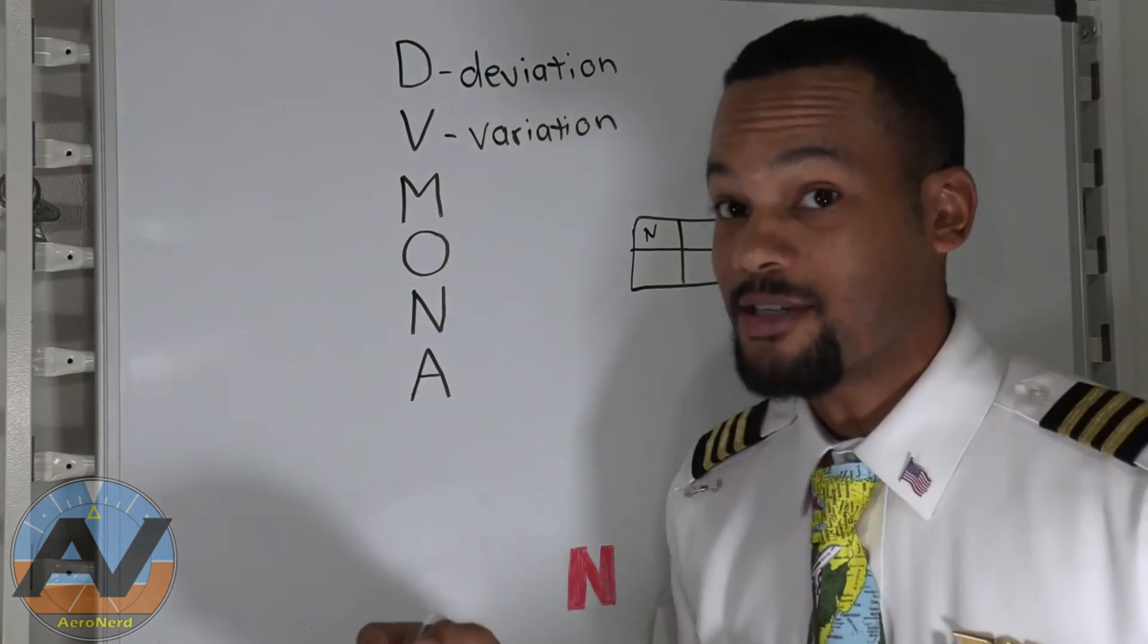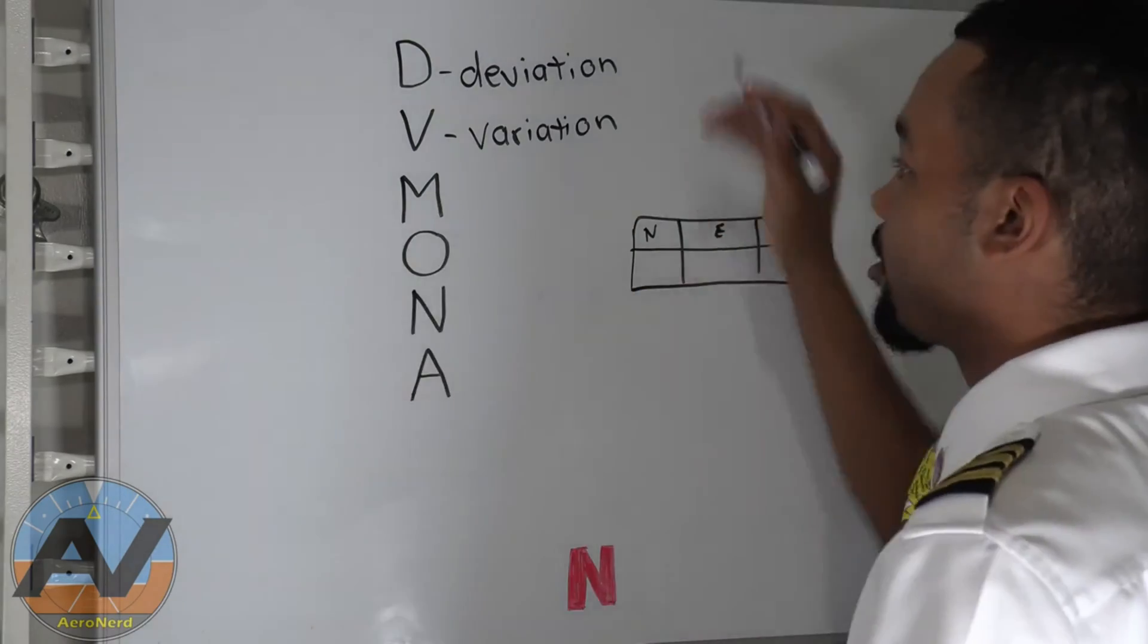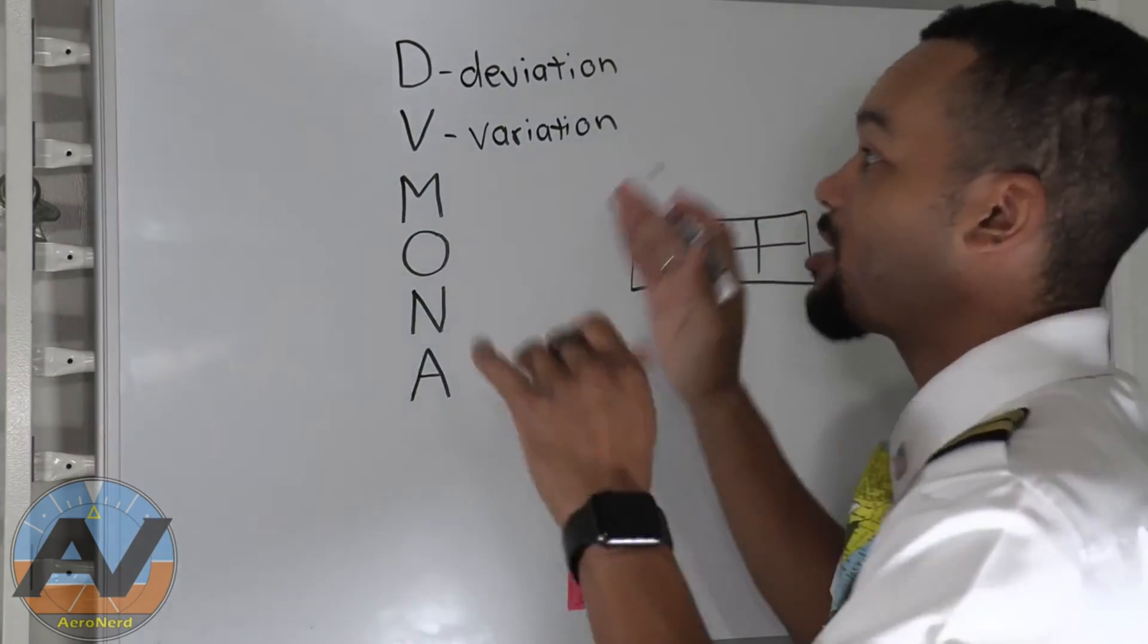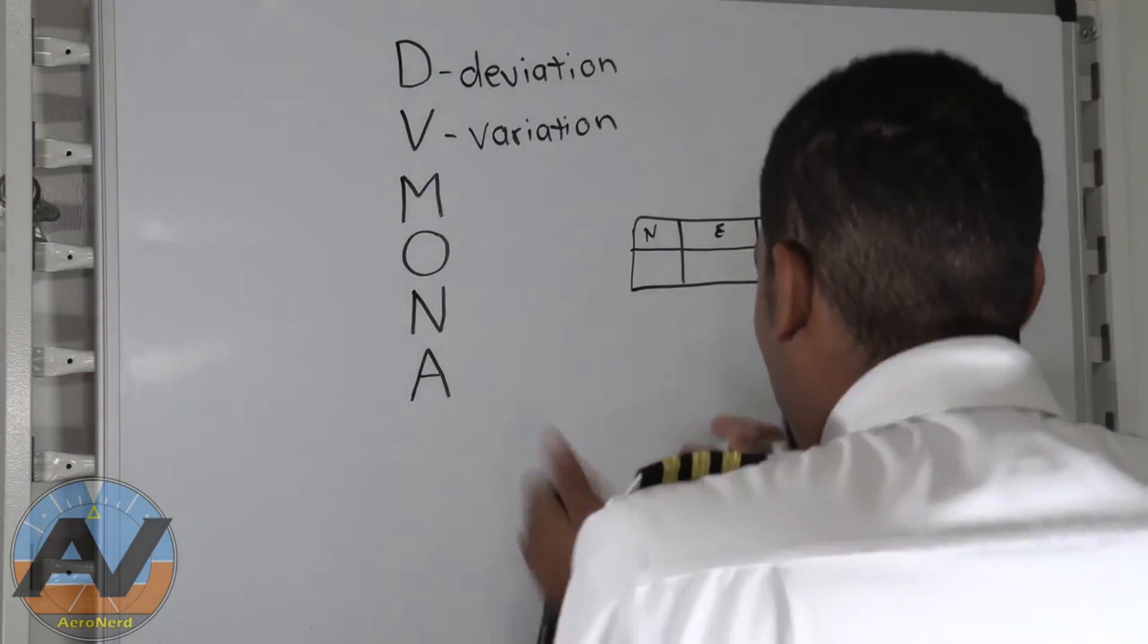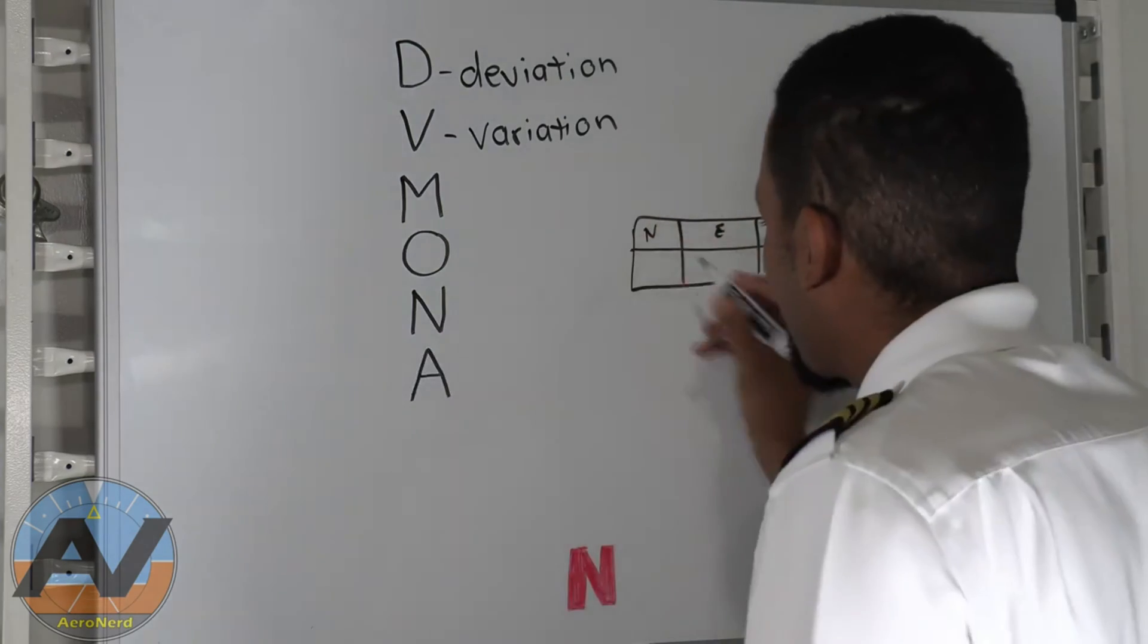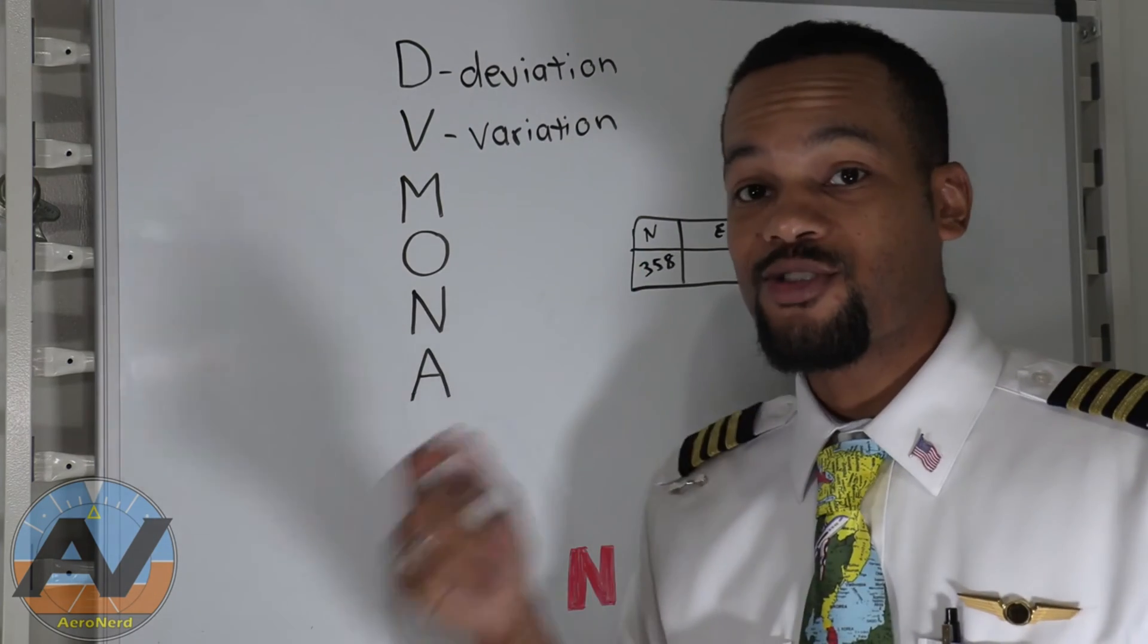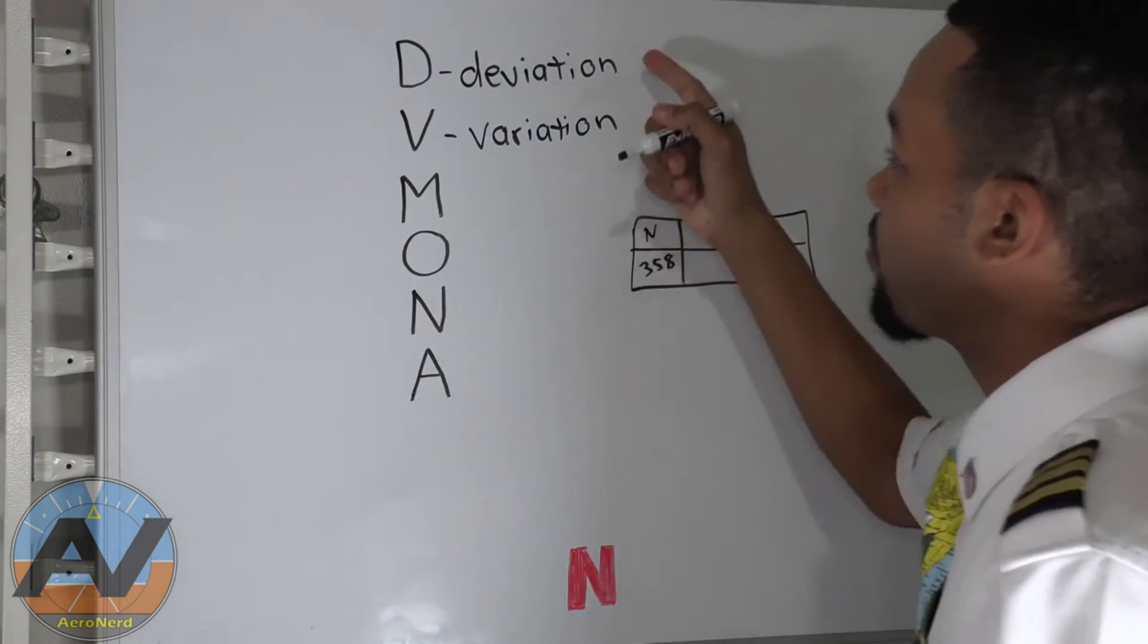Now you may see little deviation cards. So what will happen is you'll have your card right here. So north, we know is 360. So when they do their annual inspection, or they do their 100 hour, what they'll do is they'll take the compass and they'll try to realign the compass heading to as precisely as accurate as possible.